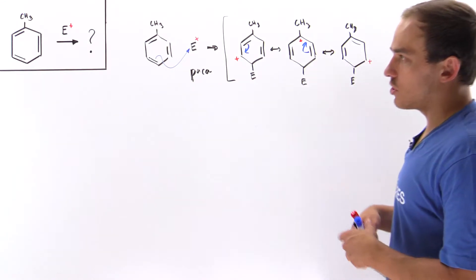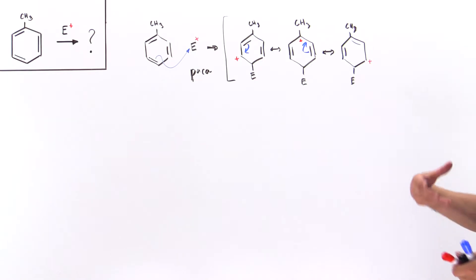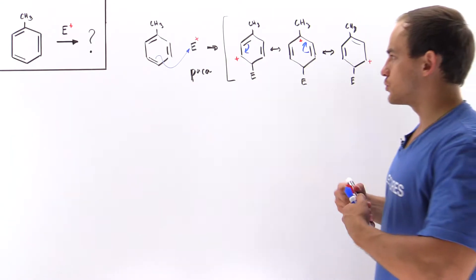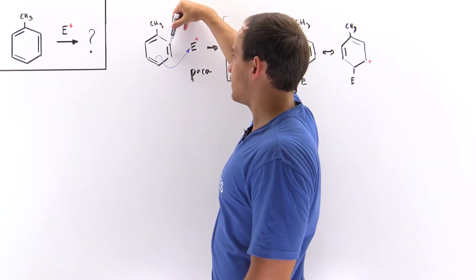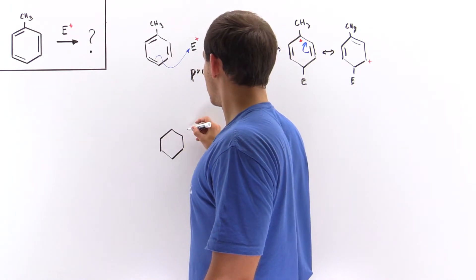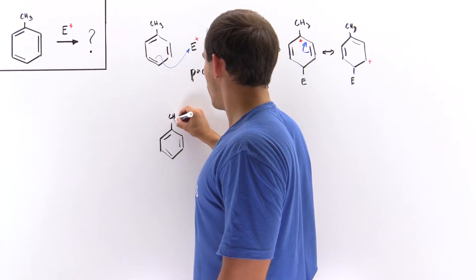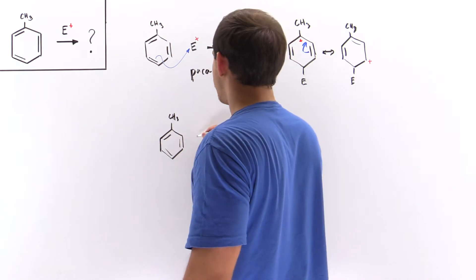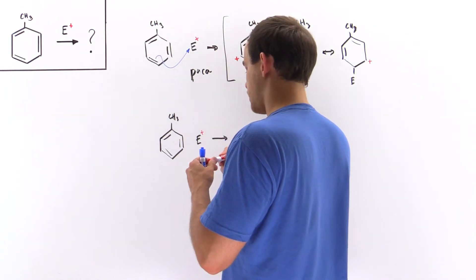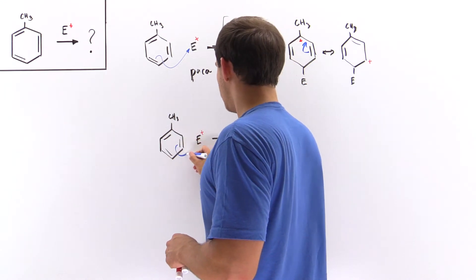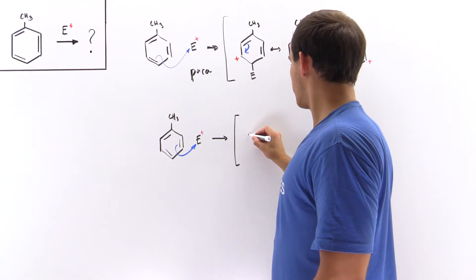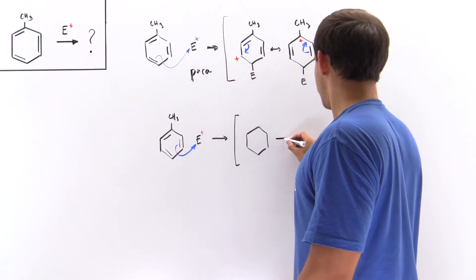We're not going to draw the ortho because it's essentially the same thing. Now let's look at the meta substitution and see what type of intermediate it produces. For meta, instead of the para pi bond interacting, the bond is formed between the third carbon and our electrophile. We have a positive charge there, and the electrons form resonance-stabilized structures — we should have three structures.